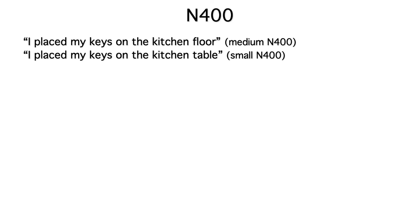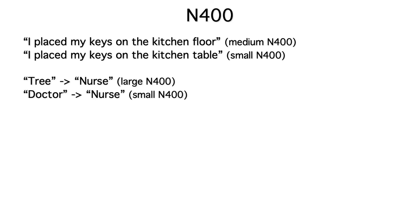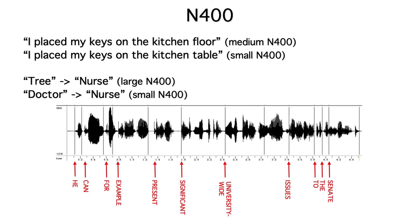Words can also elicit an N-400 even if they don't occur in a sentence. For example, in a semantic priming experiment, 'nurse' would elicit a large N-400 if preceded by an unrelated word like 'tree,' but not if preceded by a related word like 'doctor.' These effects can also be seen when people listen to natural speech rather than reading words on a computer monitor. The general idea is that every word you see or hear generates some amount of N-400, with a larger amplitude to the extent that the word can't be predicted from what came before it.